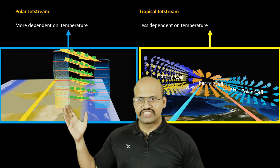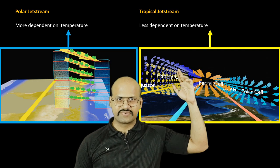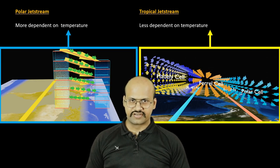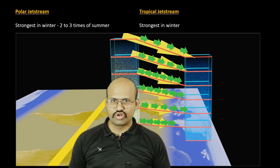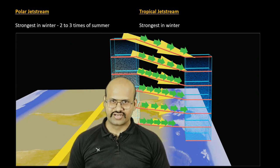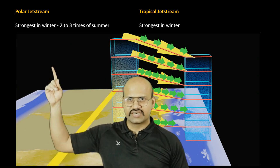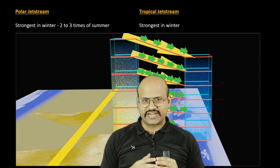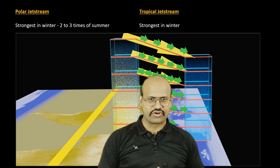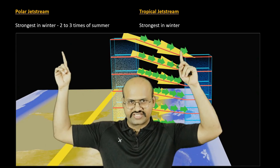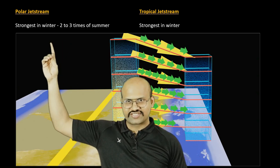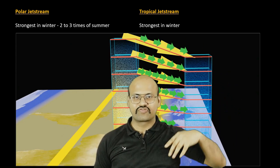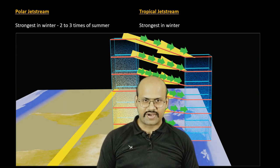The polar jet stream is more dependent on temperature while the tropical jet stream is less dependent on temperature. The polar jet stream is strongest in winter. The tropical jet stream is also strongest in winter, but the polar jet stream can be as much as two to three times stronger in winter than in summer because temperature difference plays a major role. Both pressure gradient from temperature and air circulation contribute to both jet streams, but the major factor for the polar jet stream is the pressure gradient generated by temperature, while for the tropical jet stream it is the pressure gradient generated by circulation of air.